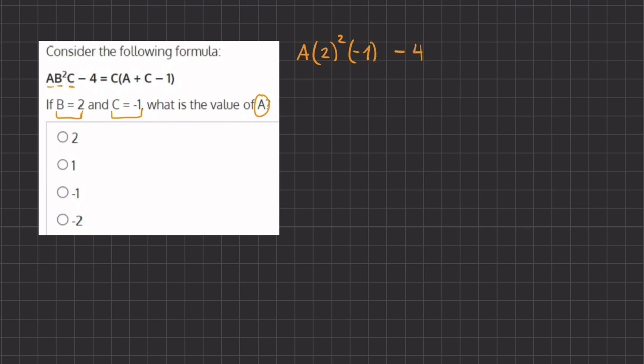Okay, and we have minus 4 equals C. And instead of C we're going to write negative 1, and we're going to open our parentheses: A plus C, which is our negative 1 minus 1.